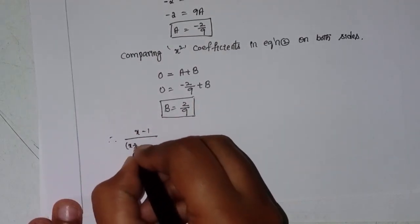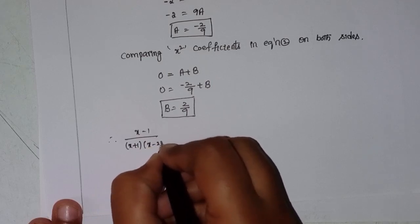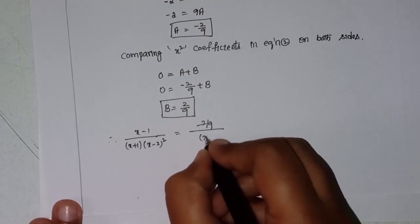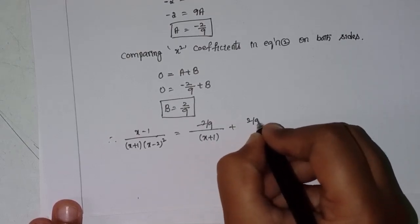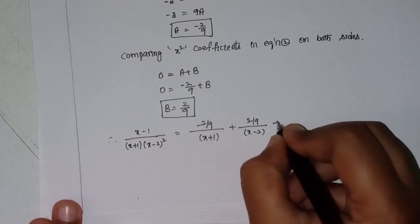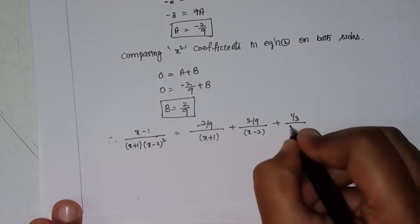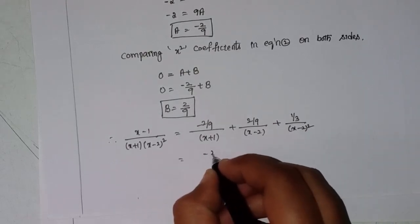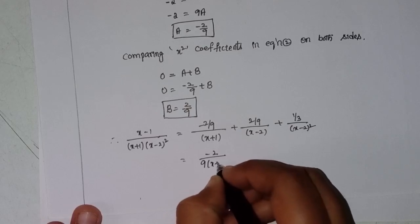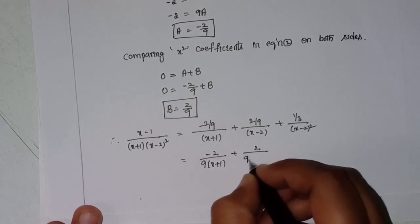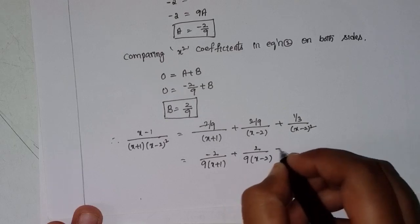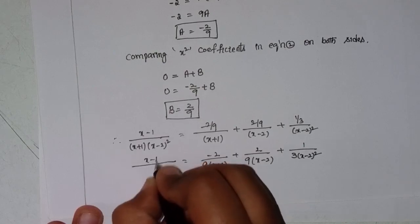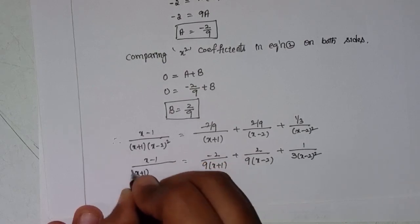Therefore, (x minus 1) divided by (x plus 1)(x minus 2)² equals (minus 2/9) divided by (x plus 1), plus (2/9) divided by (x minus 2), plus (1/3) divided by (x minus 2)². This is the required partial fraction decomposition.